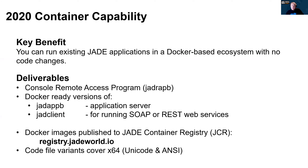The other two are console applications for hosting services. jadappb is a console application that runs an application server node as a background process, and jadclient is a console application that runs a standard client node as a background process. This is the preferred way to run a SOAP or REST-based web service in a Docker container. The main extensions to these services to make them container-ready are that they shut down gracefully when the container is stopped by a user or a container orchestrator. A container orchestrator is a software service that manages the running and health of a set of containers that make up a deployed application. Examples of container orchestrators include Docker Compose, which we'll see in the demo, Kubernetes, and Docker Swarm.